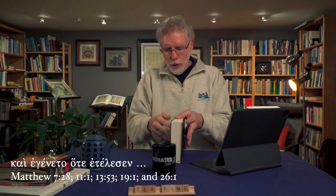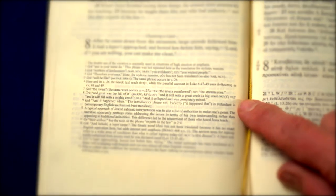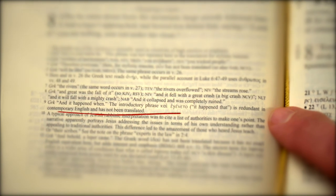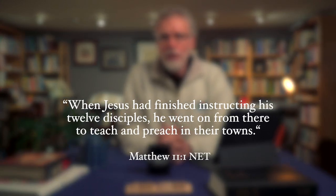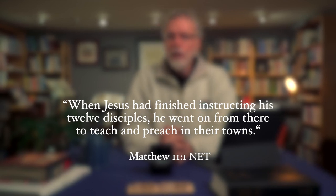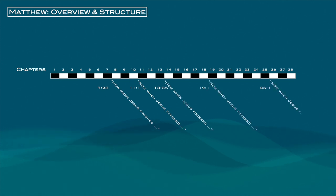The NET Bible includes a note for each one of these phrases found in Matthew, reading: 'The Greek reads and it happened when. The introductory phrase kai egineto, it happened that, is redundant in contemporary English and has not been translated.' These five verses serve as transitions that move us from one section to the next — they both look back with 'when he had finished' and forward to what comes right after. For example, in 11:1, when it reads 'when Jesus had finished instructing his disciples, he went on from there to teach and preach in their towns,' that transition not only concludes the previous section but leads us into what Jesus is going to do next. For now, I'm just going to put a red line on the chart for the sake of simplicity.